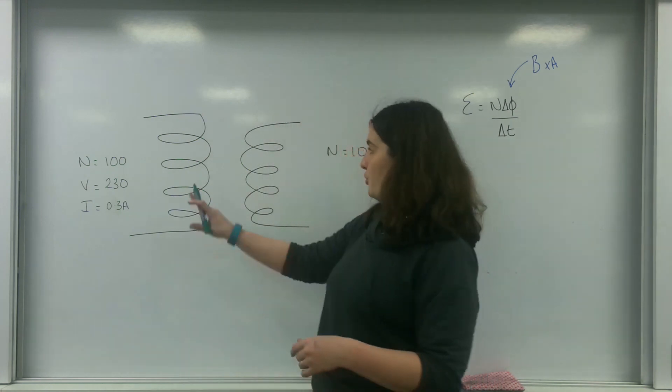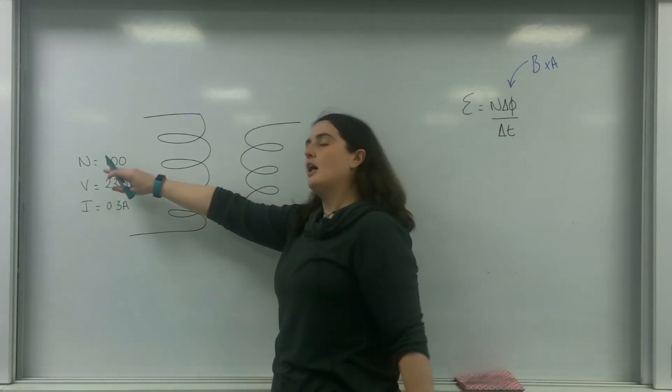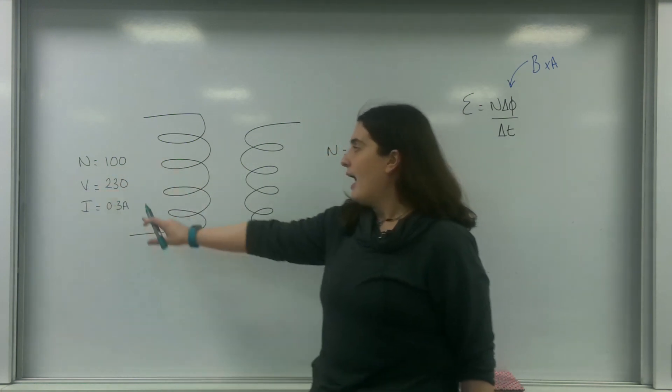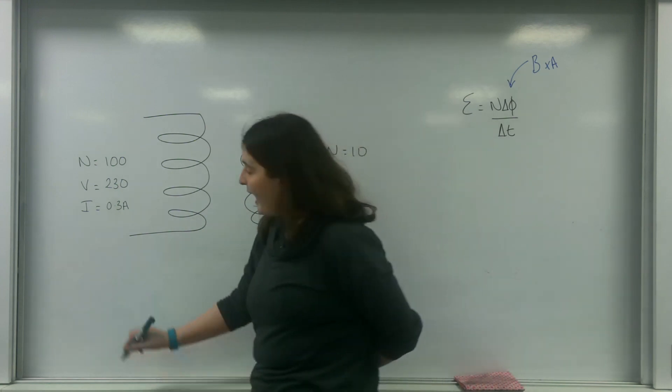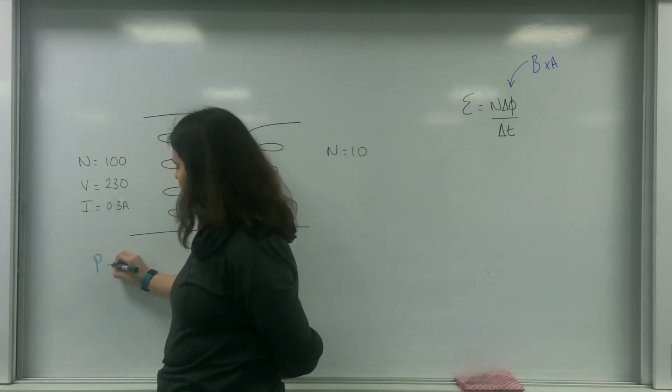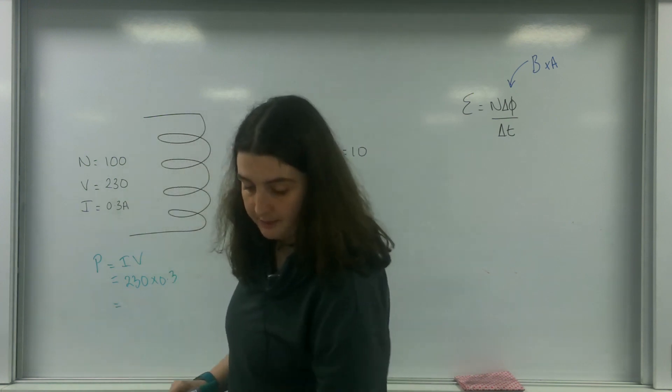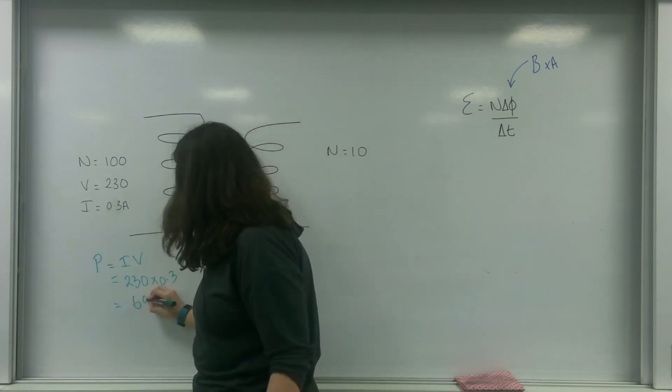So what I have here are two wires. This one here has a hundred turns, has a voltage of 230V and a current of 0.3 amps. Now the power on this side is going to be 230 times 0.3 which is 69 watts.